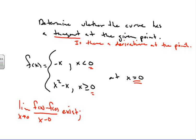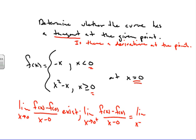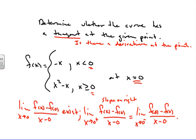In order for this limit to exist, the limit as x approaches 0 from the right of [f(x) minus f(0)] over [x minus 0] has to equal the limit as x approaches 0 from the left of [f(x) minus f(0)] over [x minus 0]. So we have to identify that the slope from the right of zero has to equal the slope on the left of zero.